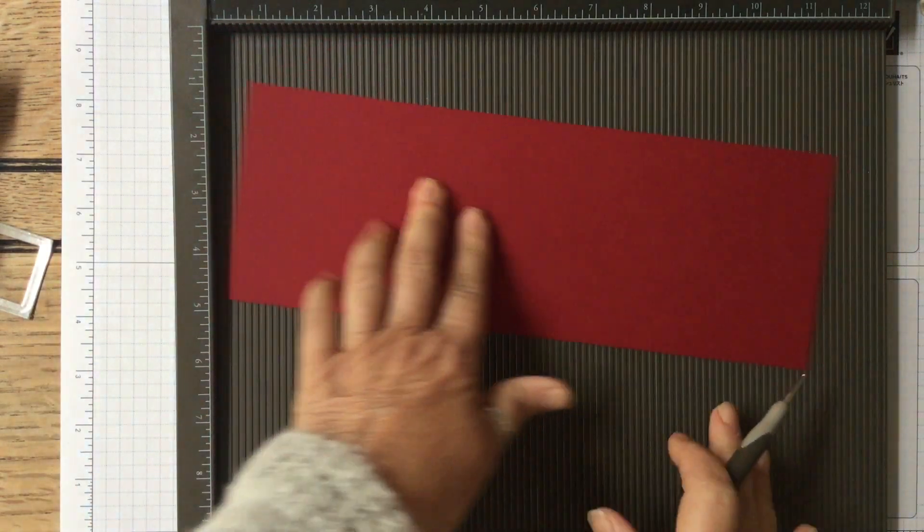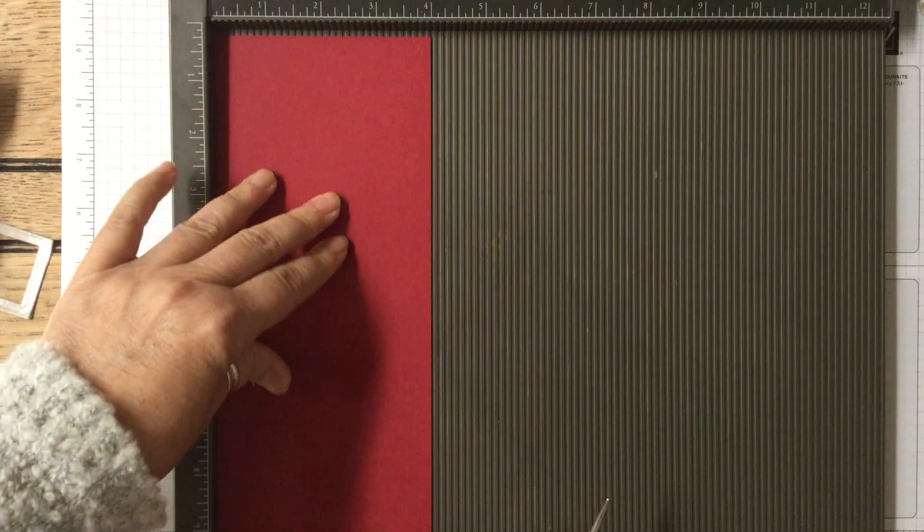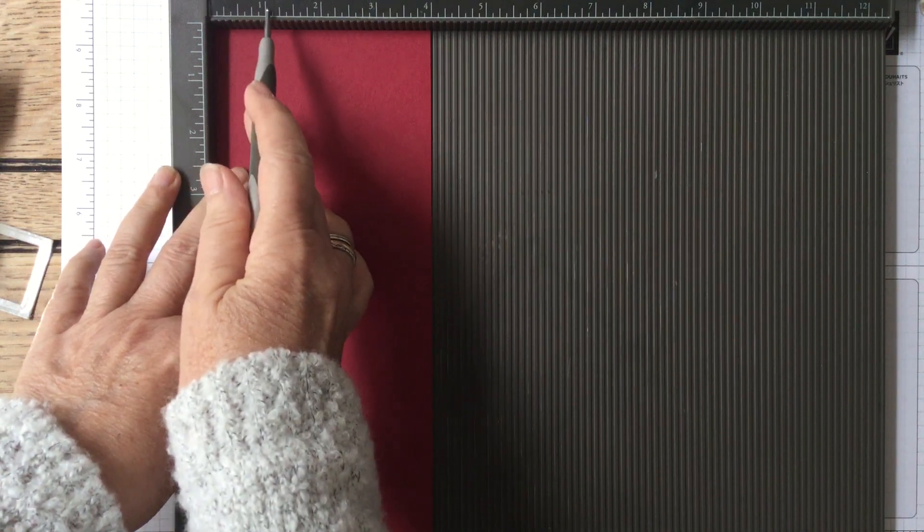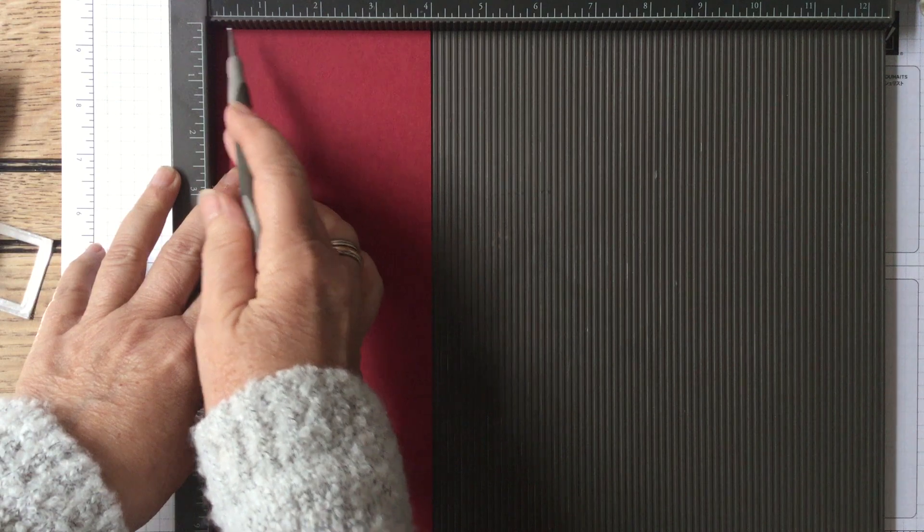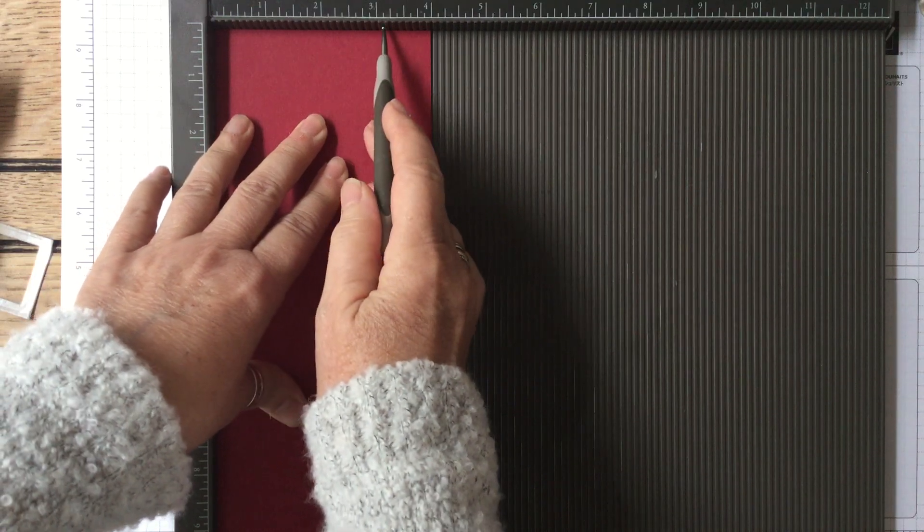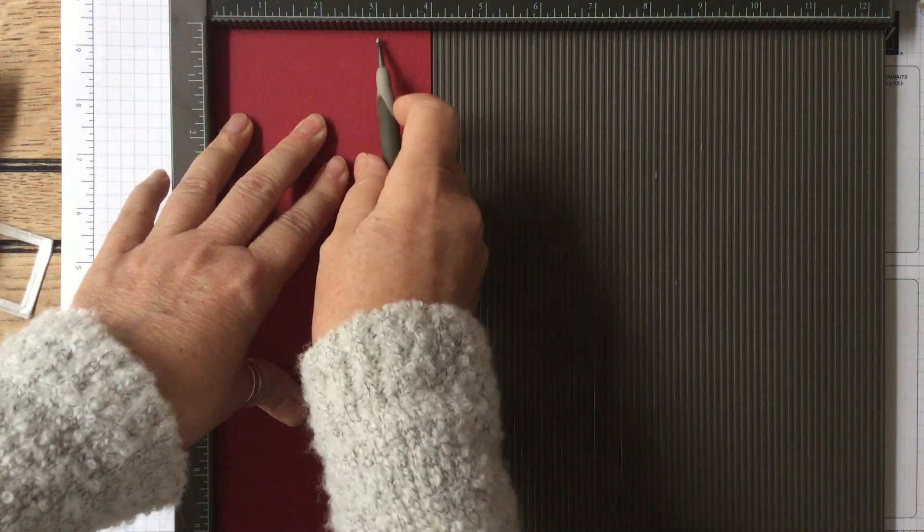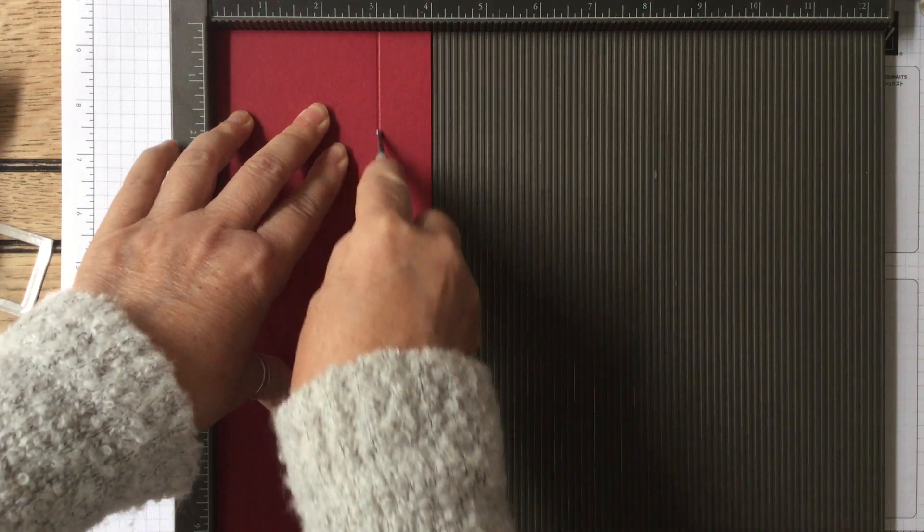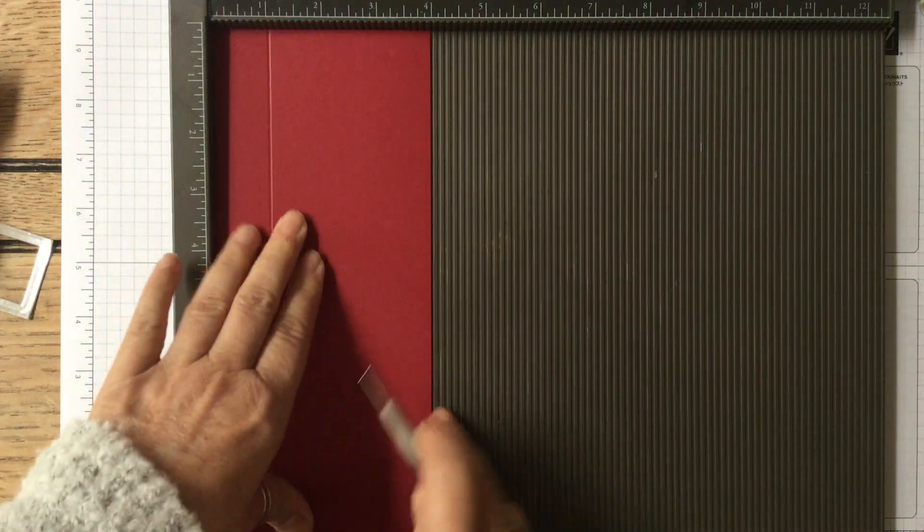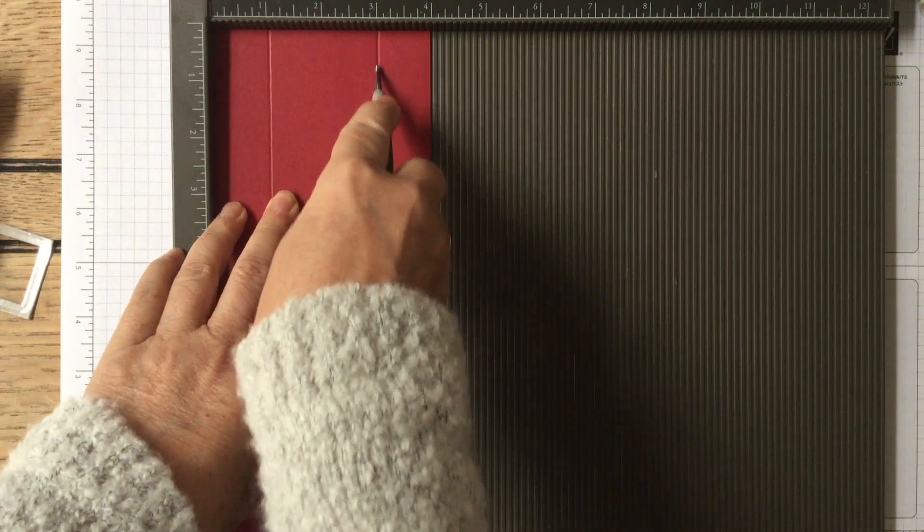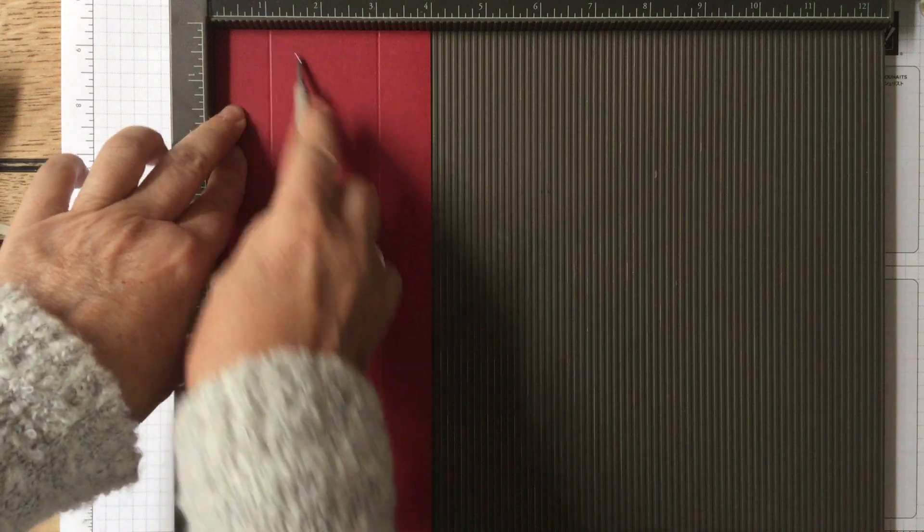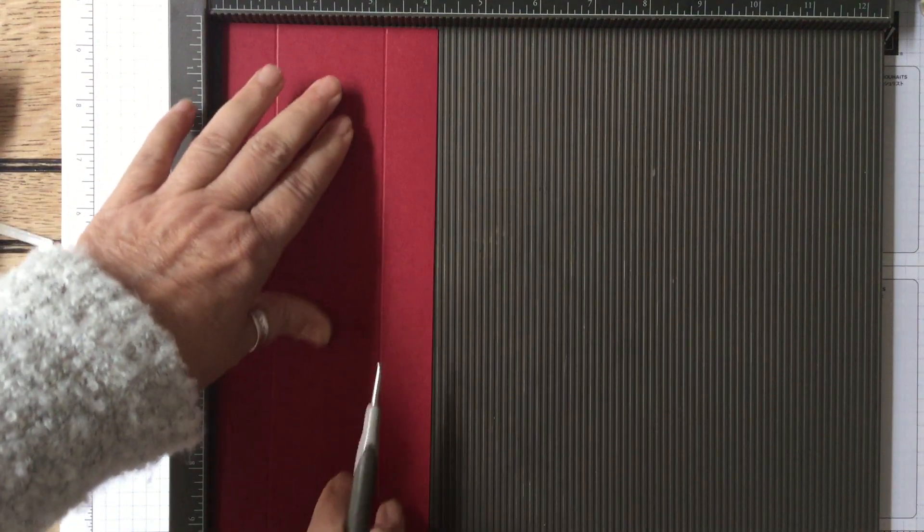So we've got the piece of cardstock which is 11 by 4 and on the short side we're going to score one inch from each side. Rather than trying to do it on here because it's a long one, I'm going to do it at three inches, then turn it round and do it at three inches. It's easier for me rather than trying to hold this on a long piece.